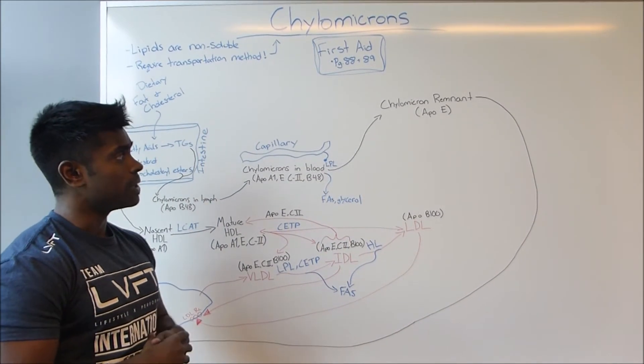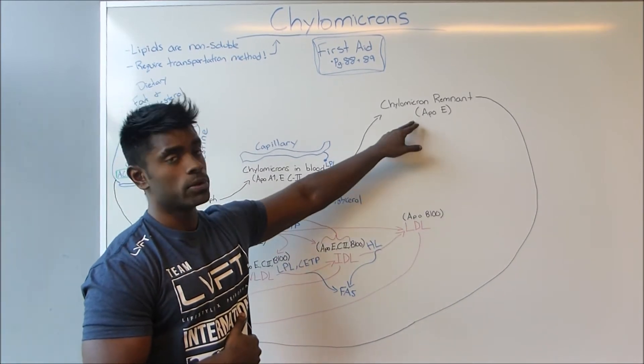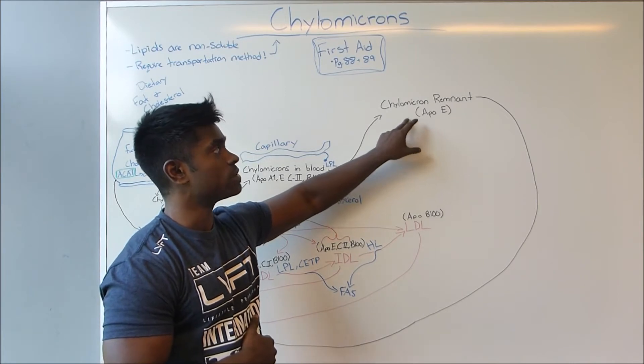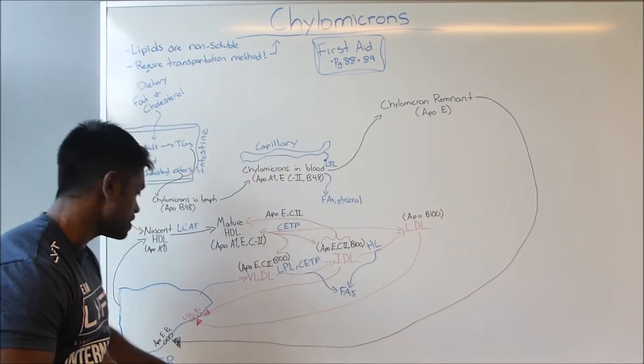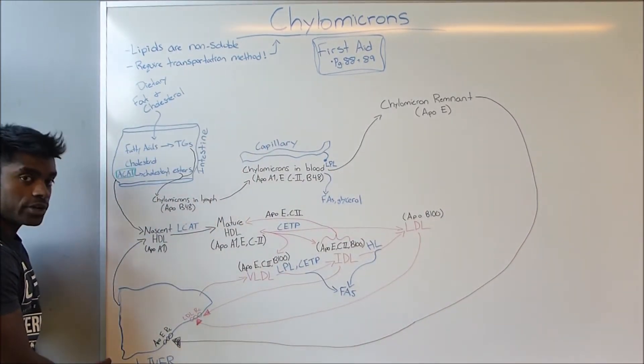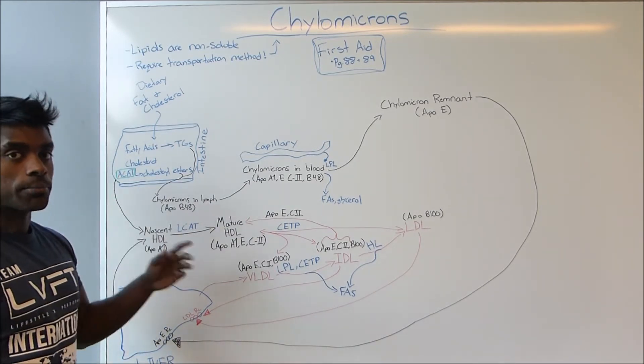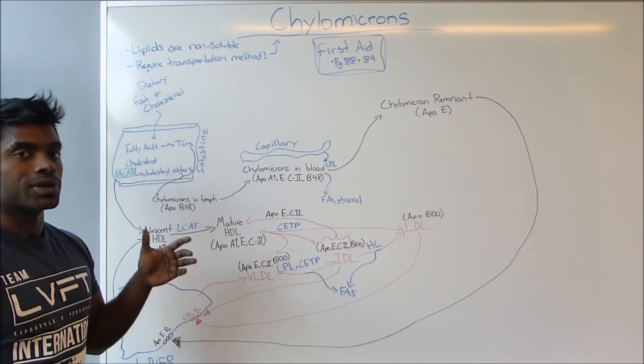As you see with the chylomicron remnant, we have another apolipoprotein called ApoE, and this apolipoprotein is important because this allows the chylomicron to re-enter back into the liver using ApoE receptors.